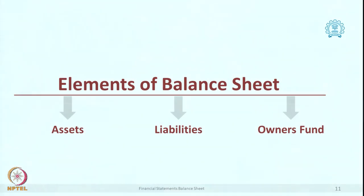On the screen you are seeing 3 major elements: assets, liabilities, and owner's funds. Within that, we have already discussed assets and almost completed the liabilities. Today we will go into owner's fund, then we will see the process of how the balance sheet emerges, and then we will discuss what is a profit and loss account.